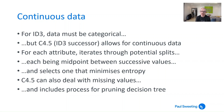But the successor to ID3, C4.5, allows for continuous data. For each attribute, what it essentially does is iterate through all the potential splits, with each split being the midpoint between successive values. Rather than just calculating the information gain on a category, for each variable you work out the cutoff point in that dataset which maximizes the information gain for that choice. Then you're comparing all these different choices across the different variables and looking at the one which gives the highest information gain.